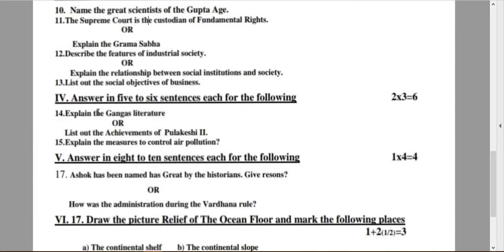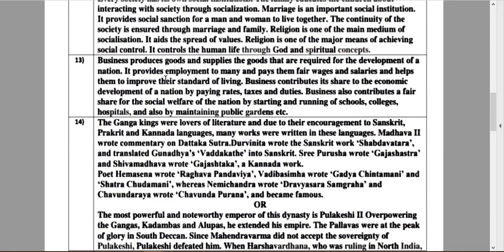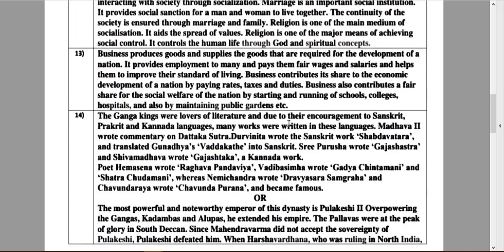Let's move on to next question, question number 13: List out the social objectives of business. Business produces goods and supplies the goods that are required for the development of a nation. Business provides employment to many and pays them fair wages and salaries and helps them to improve their standard of living. Business contributes its share to the economic development of a nation by paying rates, taxes and duties. Business also contributes a fair share for the social welfare of the nation by starting and running of schools, colleges, hospitals and also by maintaining public gardens, etc.